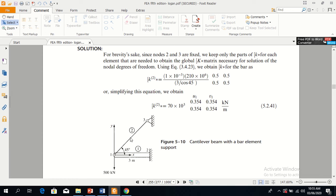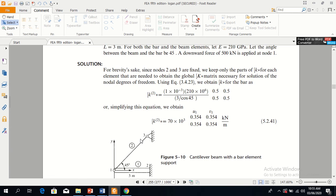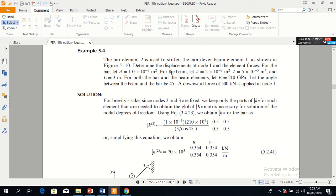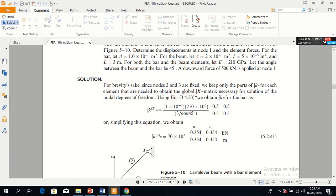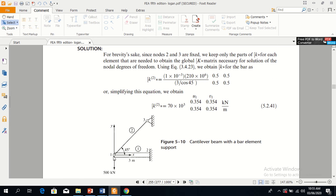Element 2 is used to stiffen element 1, which is a beam element. A force is acting at node 1 in the downward direction, which is 500 kN. Determine the displacements at node 1 and the elemental forces. So we need to find out the displacements at node 1.